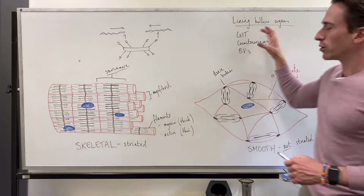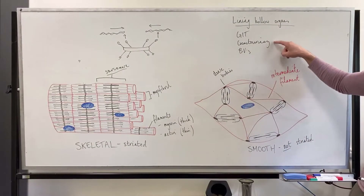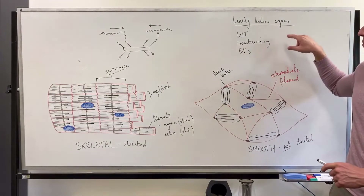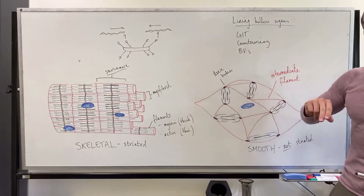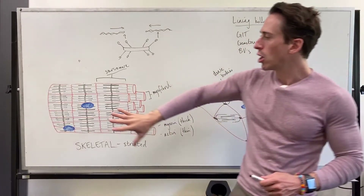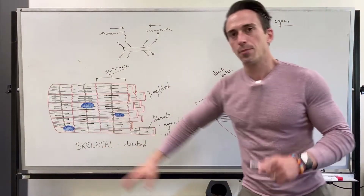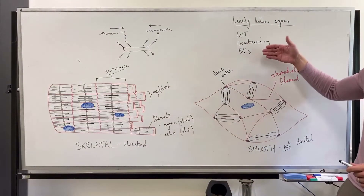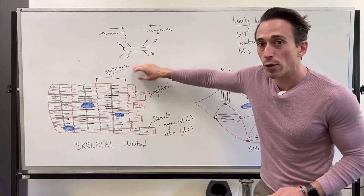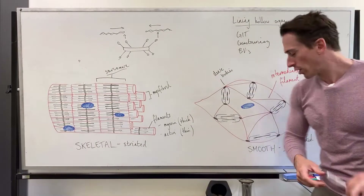Another key difference: we do not consciously control the contraction or relaxation of smooth muscle, but we do control skeletal muscle. So skeletal muscle is under voluntary, conscious control, while smooth muscle is involuntary — controlled unconsciously.